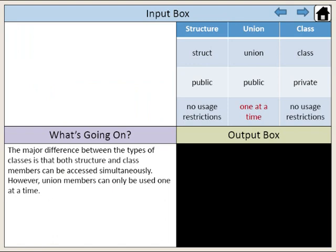The major difference between the types of classes is that both structure and class members can be accessed simultaneously. However, union members can only be used one at a time.